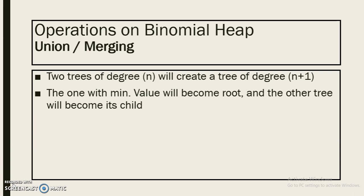When we combine two trees of the same degree, then among two roots the one with minimum value will become the root of the combined tree, and the other tree will become a child of the minimum root node.